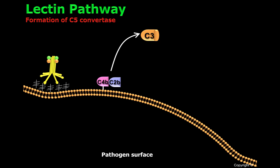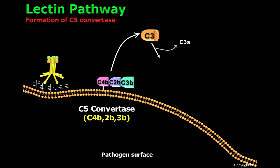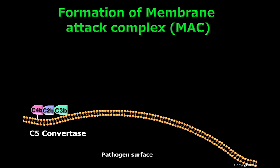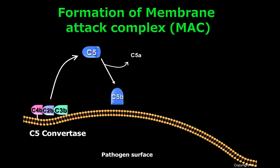If the C3 convertase clips C3 and C3B is close enough to this C3 convertase, it will bind to it, generating a new complex called C5 convertase, or C4B-C2B-C3B. This C5 convertase has the capacity to cleave C5, generating C5B and C5A.